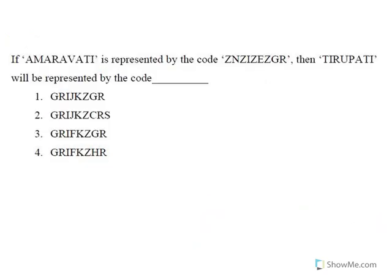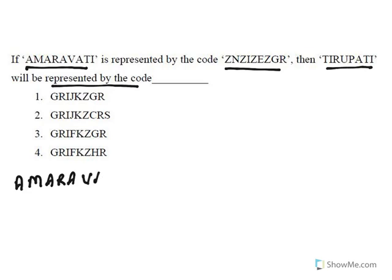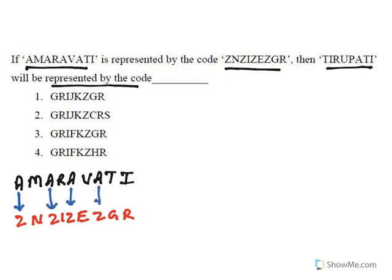Moving to the next one: if Amaravati is represented by a certain code, then what will Tirupati be represented by? Look at the mapping: A is replaced by Z. This means the first alphabet is replaced with the last alphabet. To find the pattern, we need to break the alphabet into two sets of 13. The first set is A through M, and the second set is N through Z.